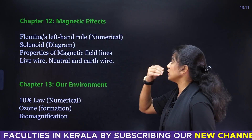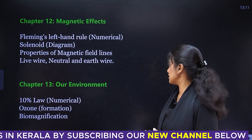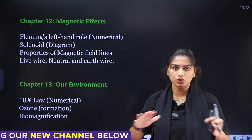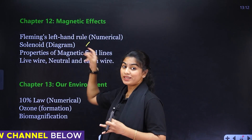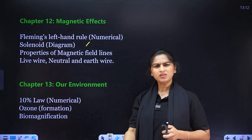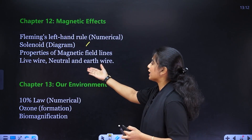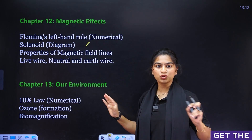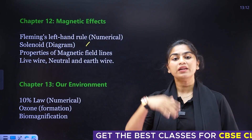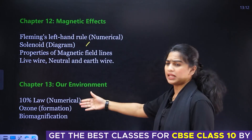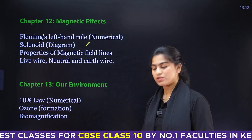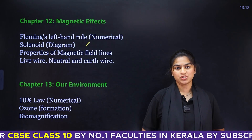For Magnetic Effects, important questions are expected. In Chapter 13, the Environment chapter, you can expect about 10% weightage. Ozone formation is very important, and so is Biomagnification.